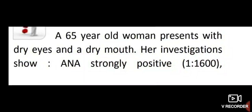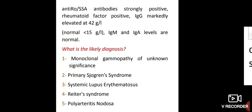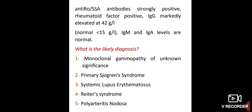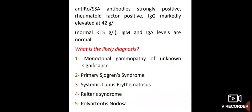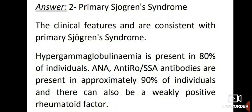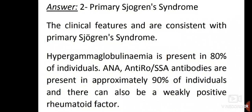A 65-year-old woman presents with dry eyes and dry mouth. Investigations show ANA strongly positive, anti-Ro/SSA antibodies strongly positive, rheumatoid factor positive, immunoglobulin G mildly elevated at 42, while IgM and IgA levels are normal. The likely diagnosis is primary Sjögren's syndrome. Hypergammaglobulinaemia is present in 80% of individuals, ANA and anti-Ro antibodies are present in approximately 90%, and there may be a weakly positive rheumatoid factor.